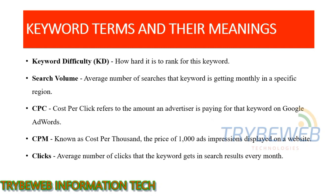Some basic keyword terms and what they mean. Keyword difficulty (KD) is a measurement of how hard it is to rank for a keyword; we will discuss the metrics in more detail in future videos. Search volume is the average number of searches a keyword gets monthly in a specific region. It is advisable to go after keywords with a good amount of search volume — targeting keywords with zero search volume is a total waste of time, like selling sand at the beach.